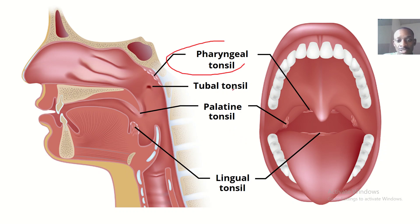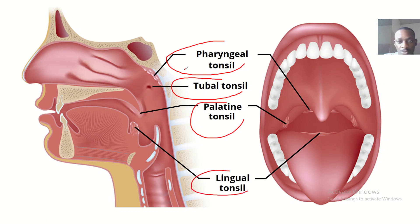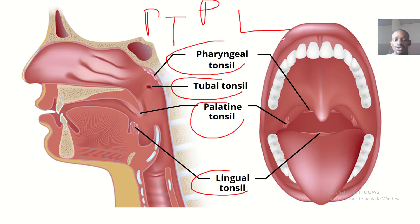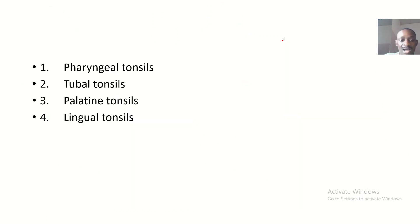Pharyngeal tonsils, tubal tonsils, palatine tonsils, lingual tonsils. My memory aid for this will be P, T, P, L — pharyngeal tonsils, tubal tonsils, palatine tonsils, lingual tonsils. That's the components that form the Waldeyer's ring.